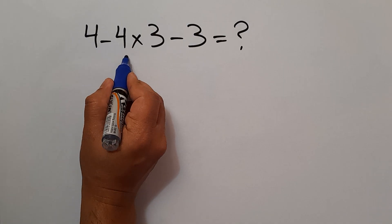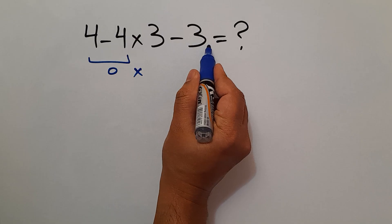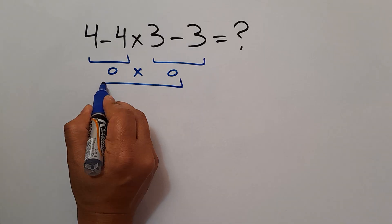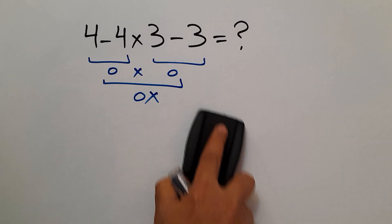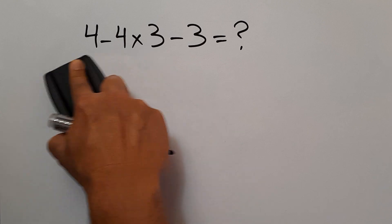4 minus 4 gives us 0 and 0 times 3 minus 3 which equals 0 and 0 times 0 is just 0. But this answer is not correct because according to the order of operations